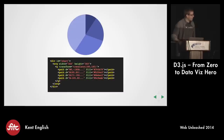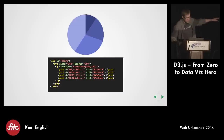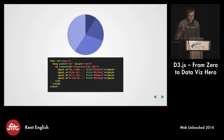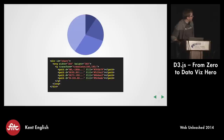If we take a look at our pie chart and the markup that's actually powering it, we have this div element that has an SVG. The SVG has a width and a height. Then we have a G inside that that's been translated so that it's centered inside the SVG — notice that 180 is half the width and height.